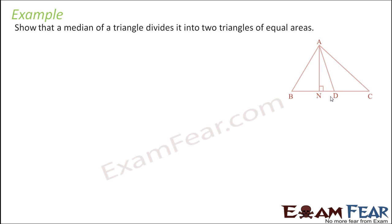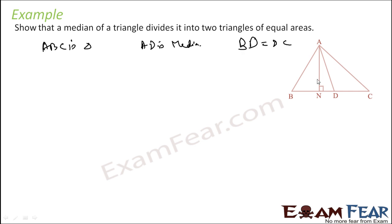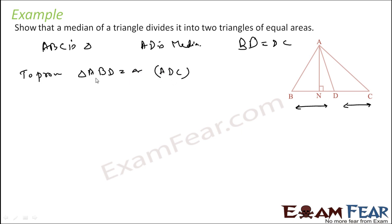So we have to prove that the median of a triangle divides it into two triangles of equal area. If ABC is a triangle and AD is the median, since AD is the median, BD would be equal to DC — this length and this length would be the same, because the median divides the side into equal halves. So we have to prove that area of triangle ABD is equal to area of triangle ADC.